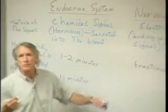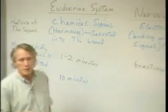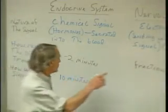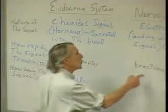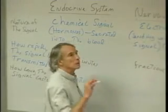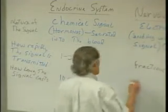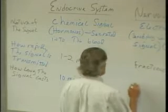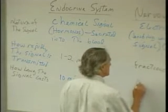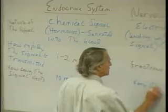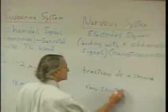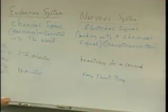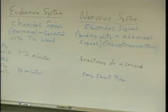With the nervous system, the signal will be transmitted for many seconds at a time, but any one signal is instantaneous — on, off. So it's a very short time, just fractions of a second.